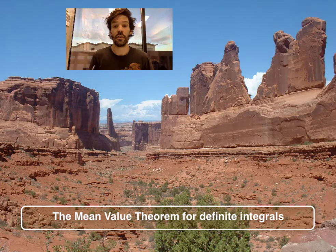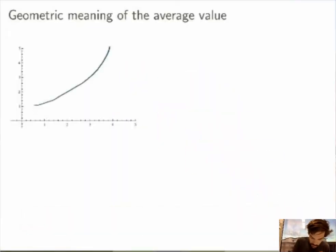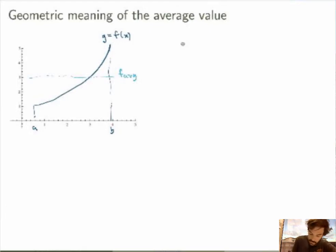What I want to do in this video is look more closely at the geometric meaning of the average value of a function. Suppose that I have a function between two points A and B, then its average value will be somewhere between — something like this maybe — this would be f-average if my blue line here is the function y equals f of x. We've defined the average value in the previous video mathematically: f-average will be given by 1 over b minus a times the integral between A and B of f of x dx.